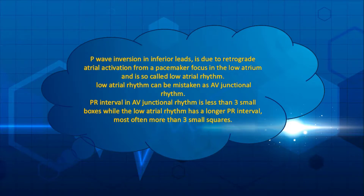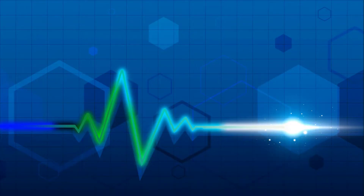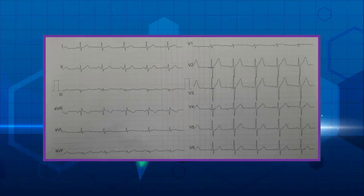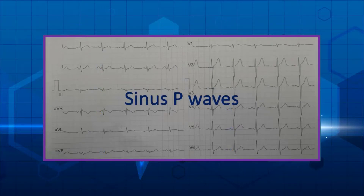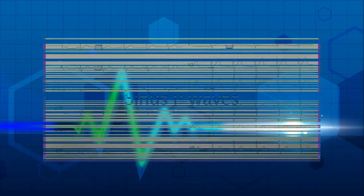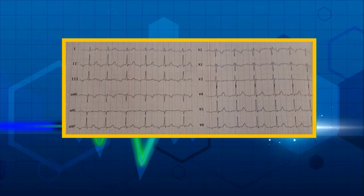Let's go through several examples. In this tracing, the P waves are upright in leads D1, D2, AVF, V3 to V6, and negative in AVR — therefore the P waves are sinus. Note that P wave amplitude in D2 is greater than D1, which is a normal finding in sinus rhythm. The P waves are also biphasic in V1.